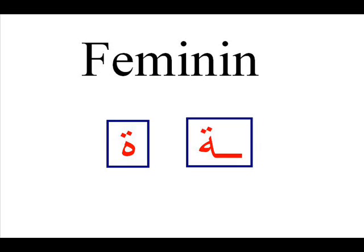Today we are also going to learn how to build the feminine. In Arabic there are two genders: masculine and feminine — just like in English with, for example, 'actor' and 'actress'. In Arabic, to build the feminine gender we add the 'taa marboota'. There are two kinds of taa marboota, which you can see on the left and on the right.